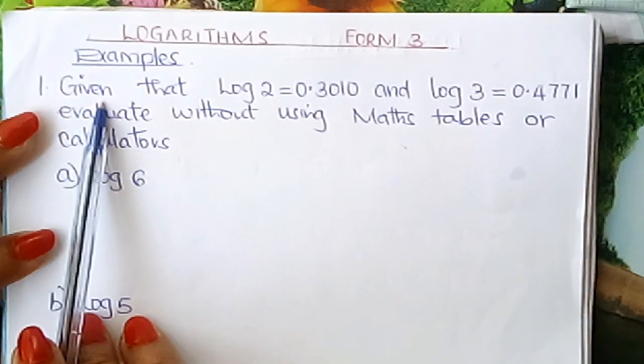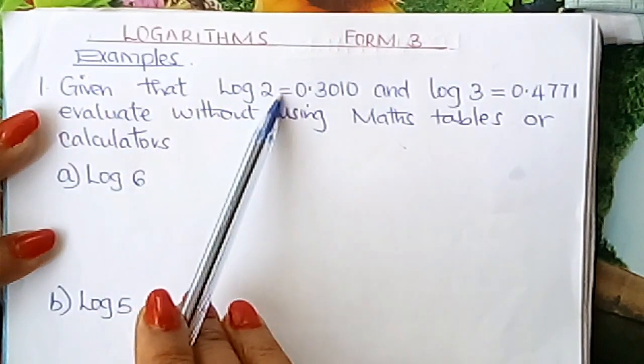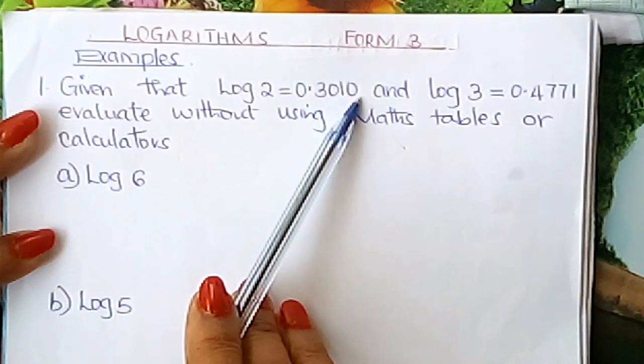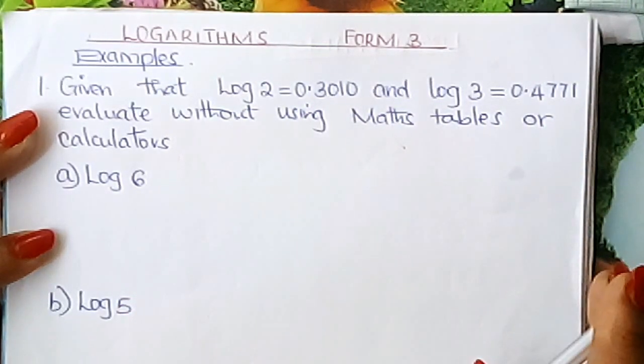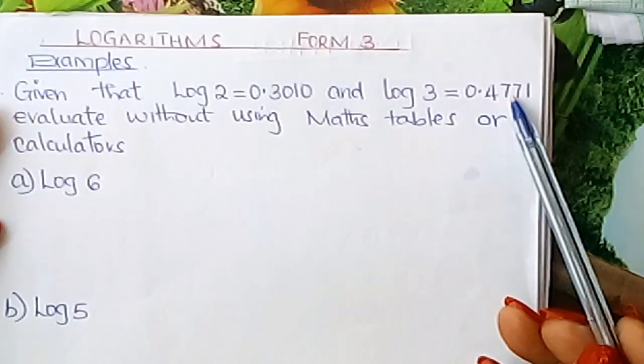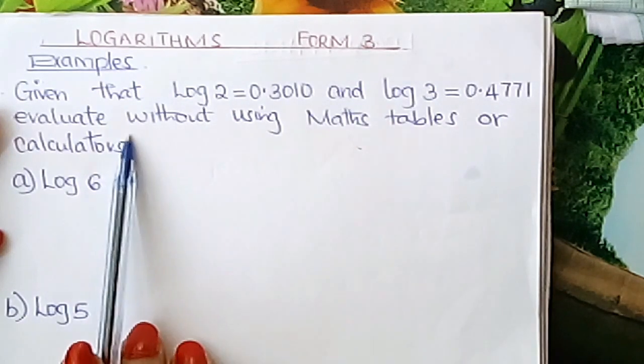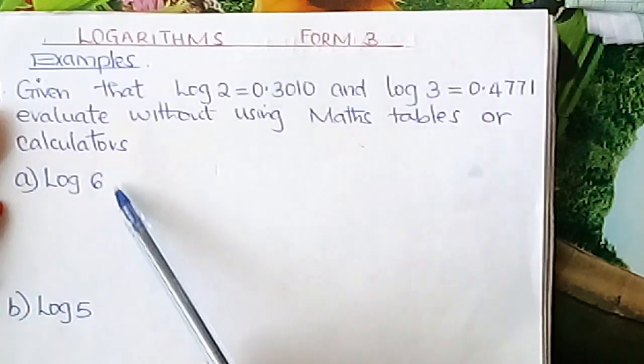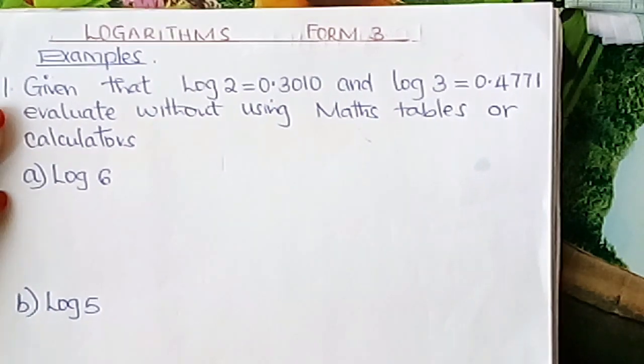Let us look at this question. Given that log 2 is 0.3010 and log 3, learner, is 0.4771, evaluate without using maths tables or calculators these two problems here.